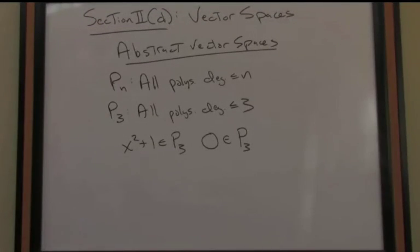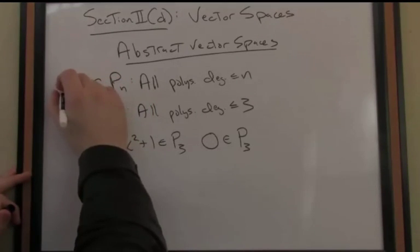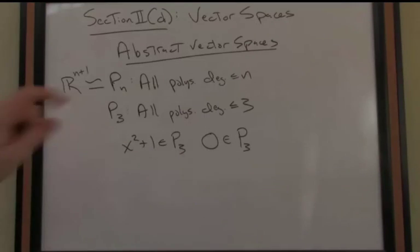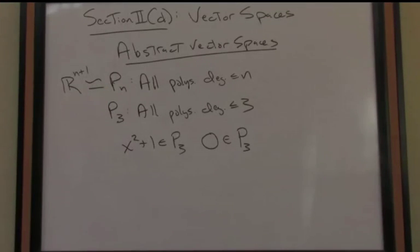This is actually no different than the Euclidean space of degree or dimension n plus 1. What I've written here is this notation that's called isomorphic. So I've said that these two vector spaces are isomorphic. Isomorphic just means iso meaning same structure. Same morph, same type.